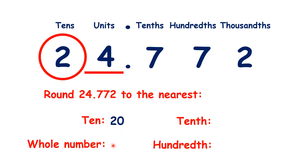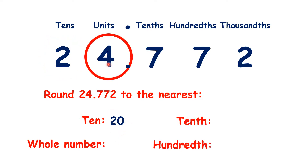Now let's round to the nearest whole number. We find our units, look across to our tenths, and we can see that we need to round up, so that's 25 to the nearest whole number.